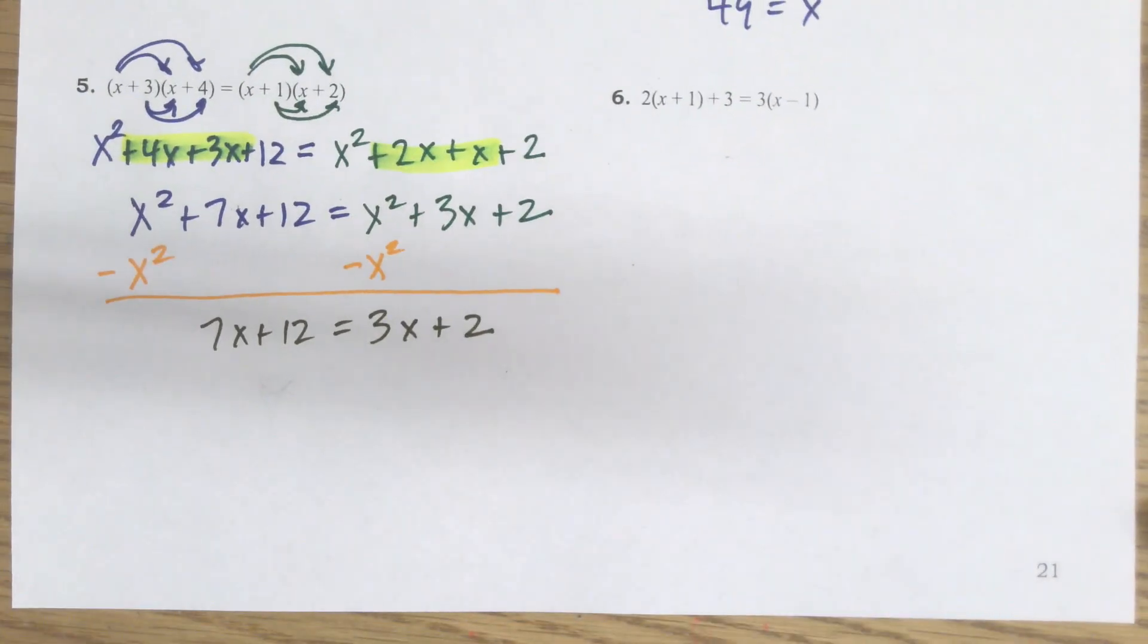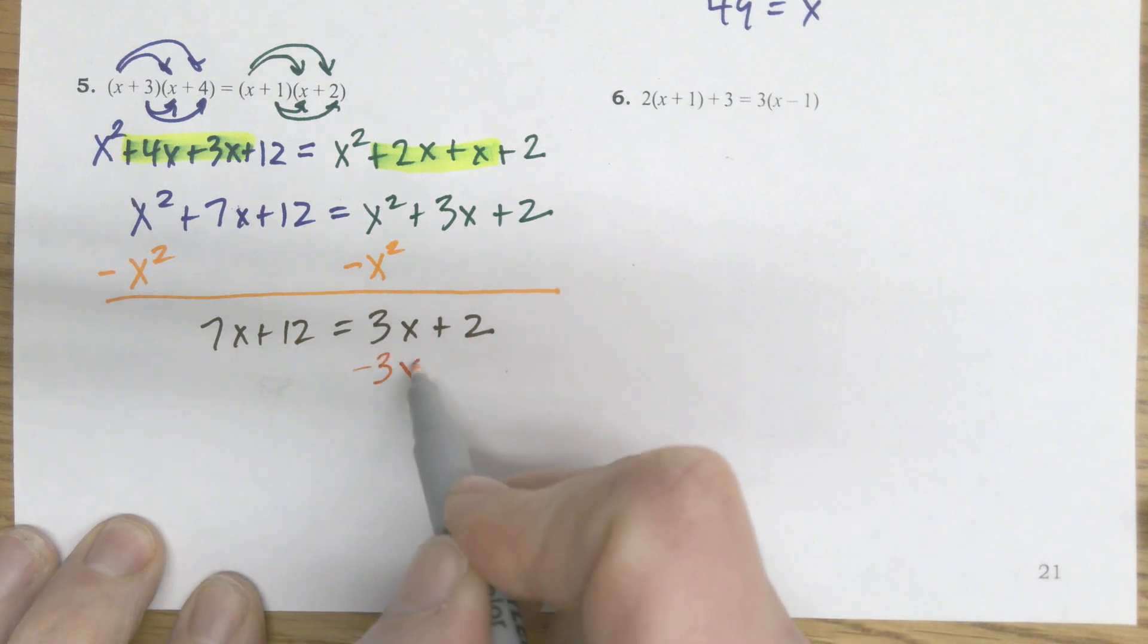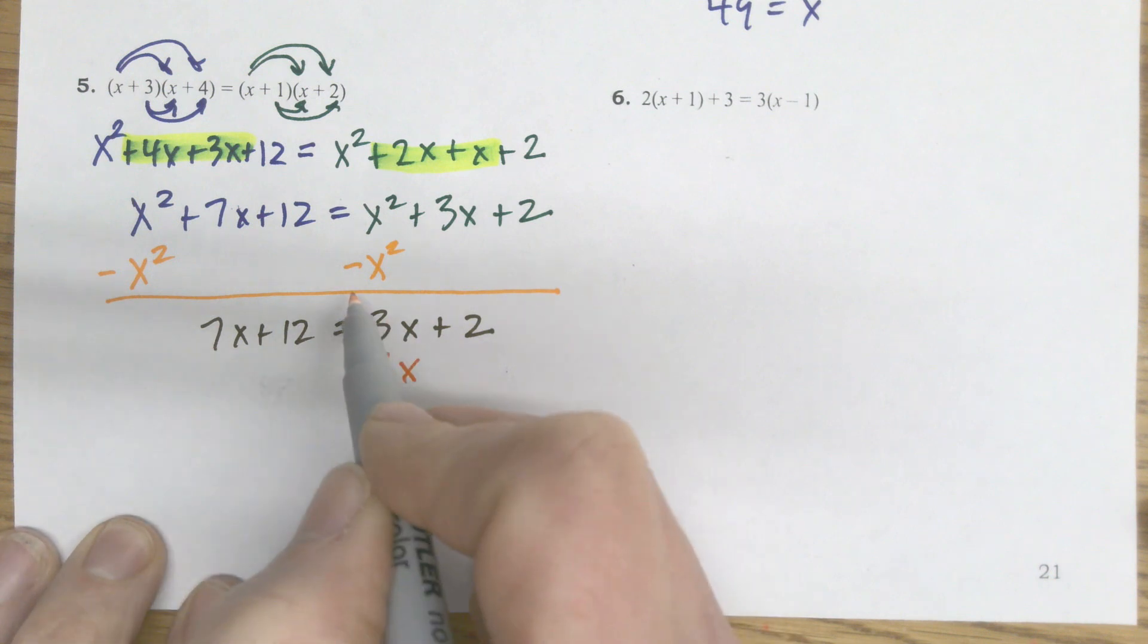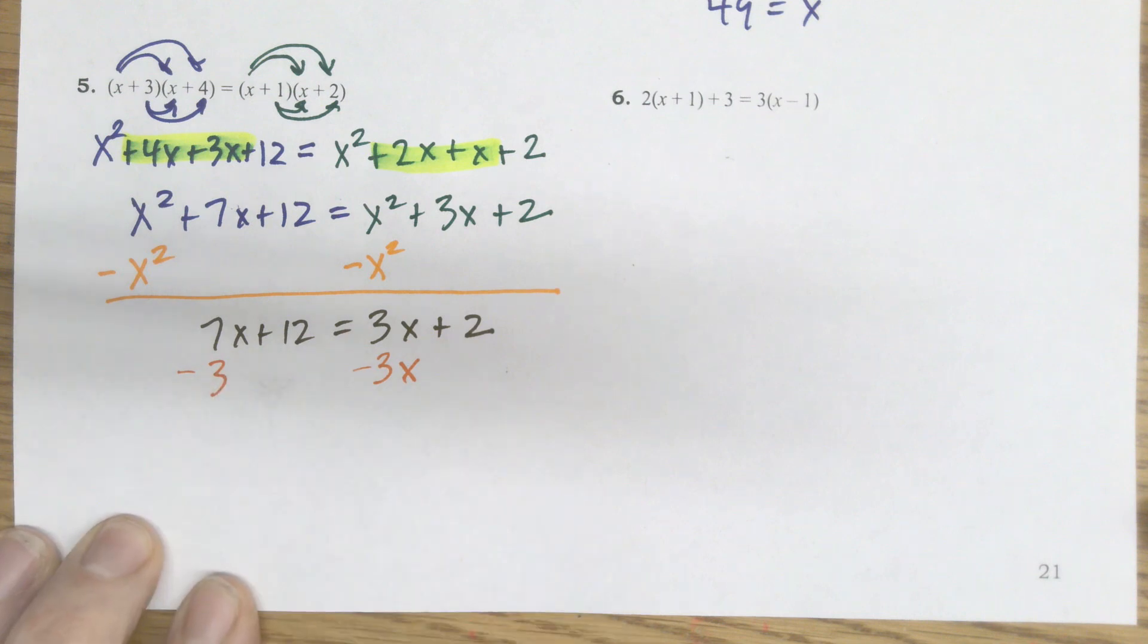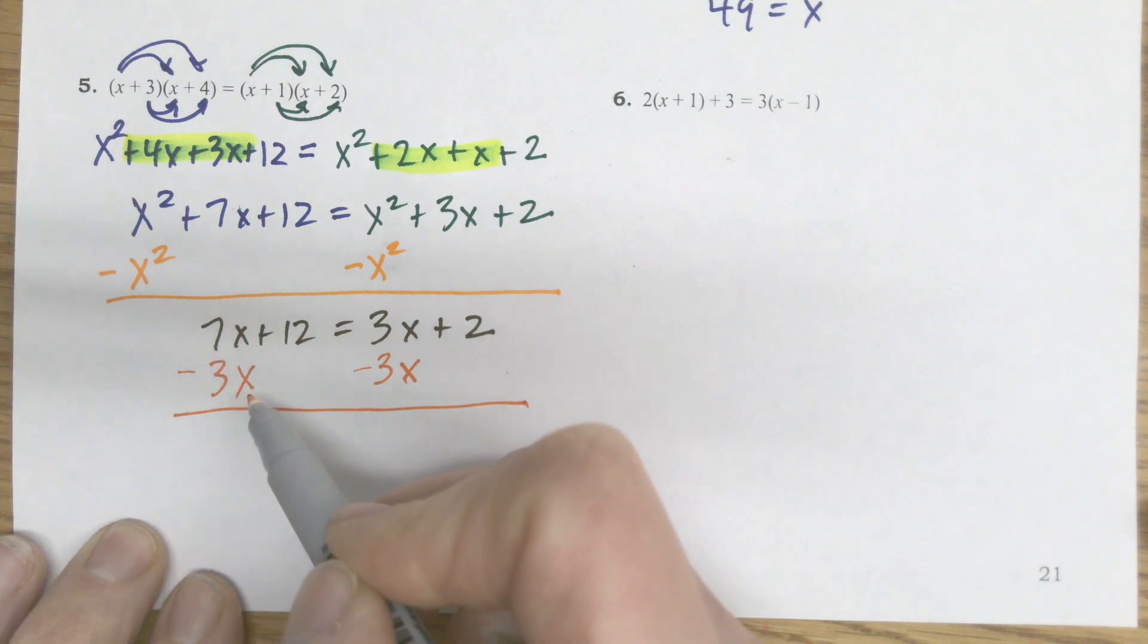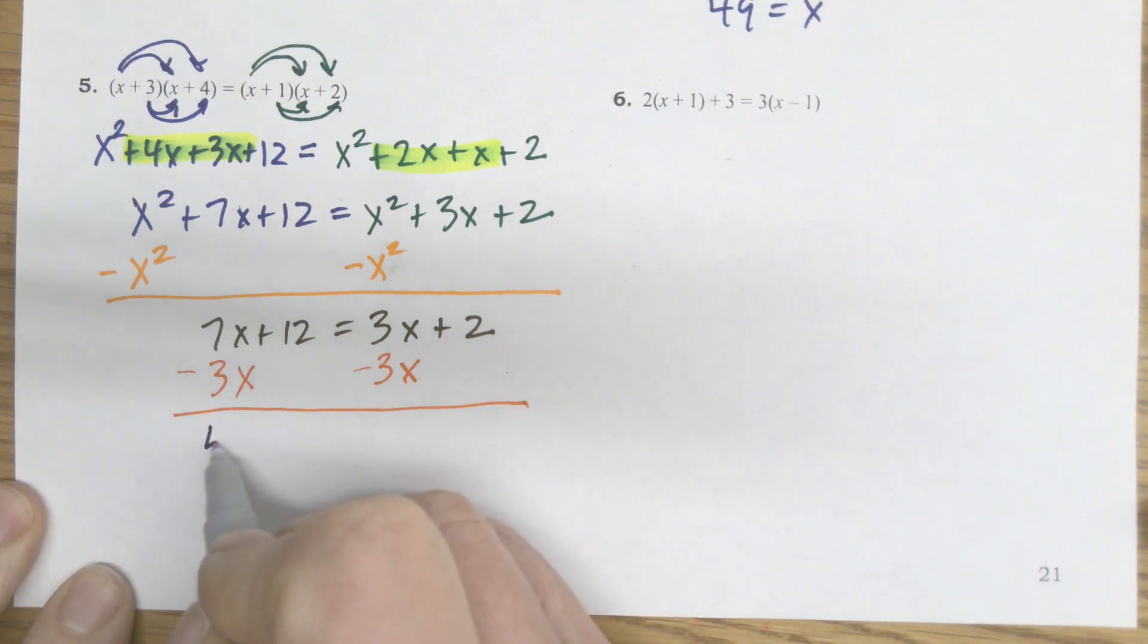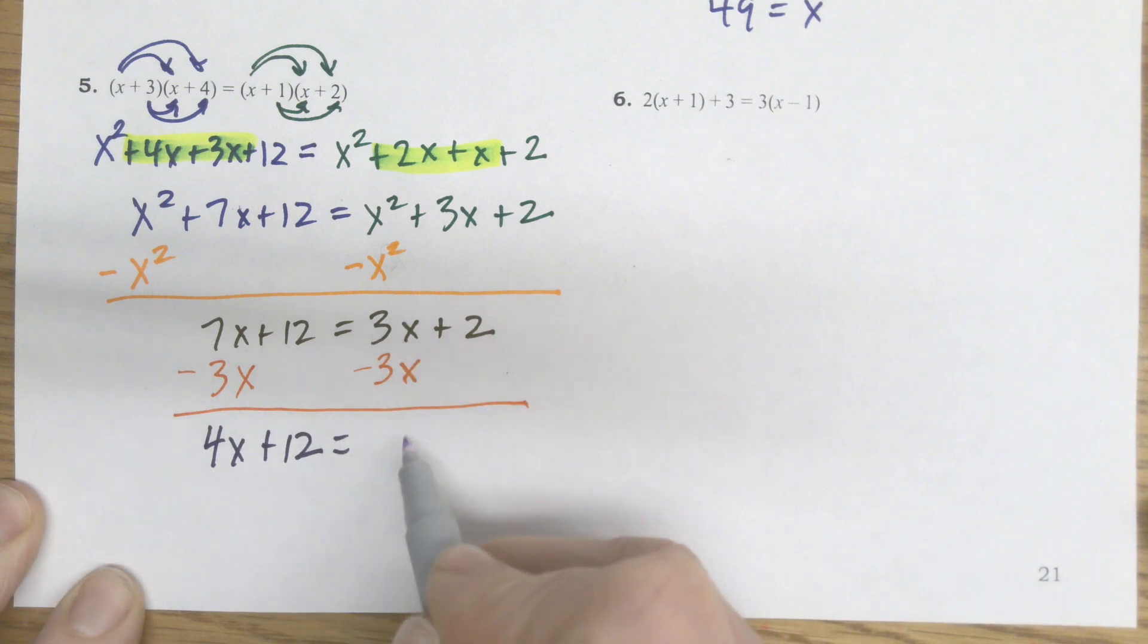Now I have variables on both sides. Now there are a lot of different techniques in doing this, but one recommendation that I have is when I have a variable on both sides, I want to remove the smallest one. So 3 is smaller than 7. So I'll remove the 3x. Because I did it on one side of the equal sign, I have to do it on the other side of the equal sign as well. So now I have 7x minus 3x. Sometimes my brain jumps ahead. 7x minus 3x gives me 4x plus 12.